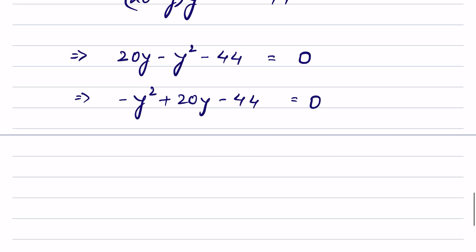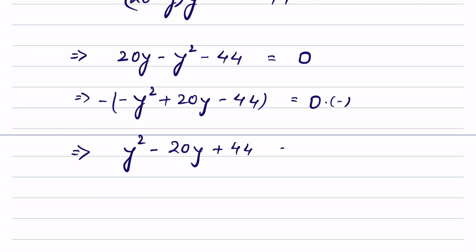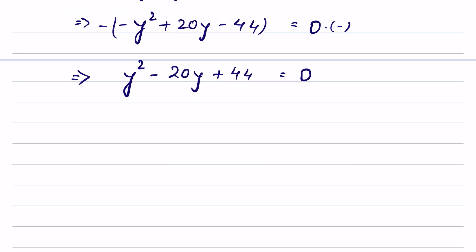Let's rearrange: minus y squared plus 20y minus 44 equals 0. We multiply both sides by minus 1, giving y squared minus 20y plus 44 equals 0.